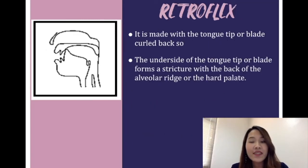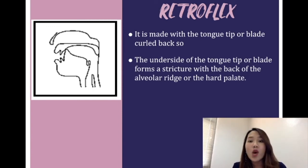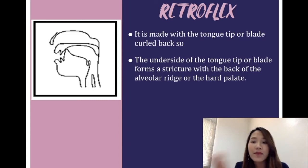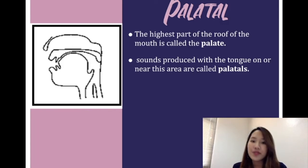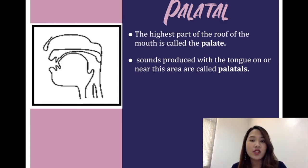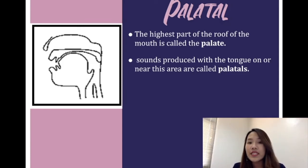The next place of articulation is retroflex. Retroflex is different from other places because we use our tongue tip or blade and curl it back so that it can touch the alveolar ridge or sometimes the hard palate. The next place of articulation is palatal. The palatal is the highest part of the roof of your mouth. We use our tongue to touch near that area, and the sound made from this area is /j/ as in the word 'you.'